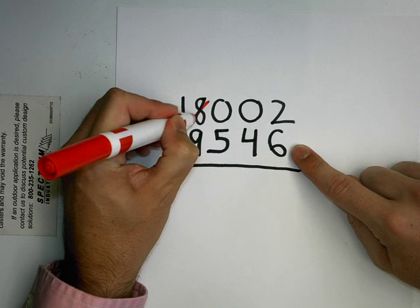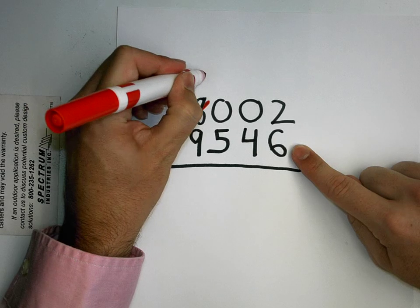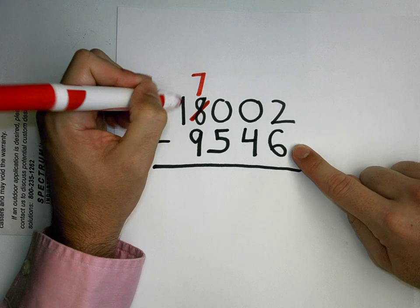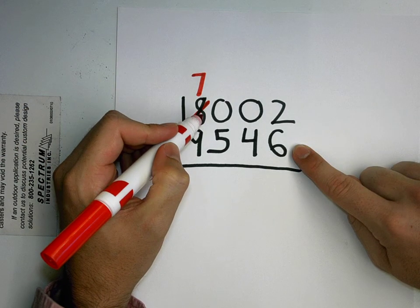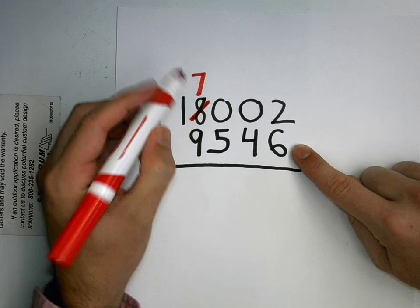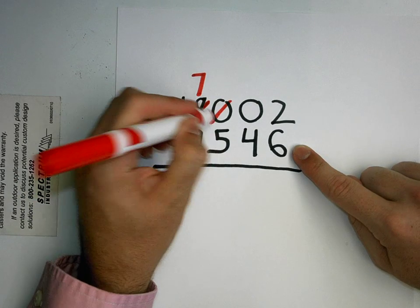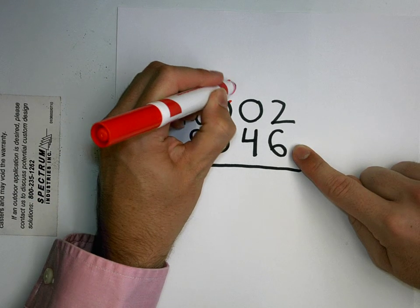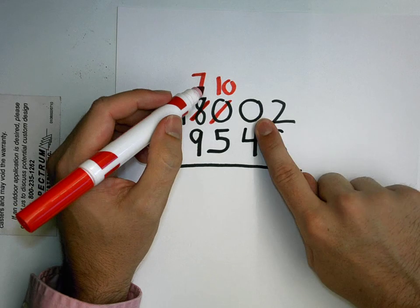So instead of eight thousands, I'm going to have seven thousands. And a thousand is just ten groups of one hundreds, so instead of zero one hundreds, I now have ten groups of one hundred, and then I can regroup over to my tens.